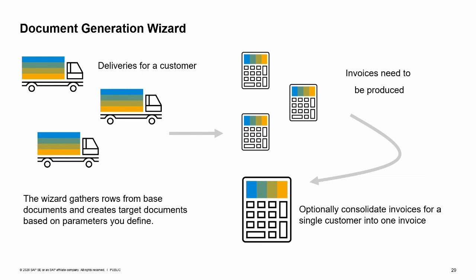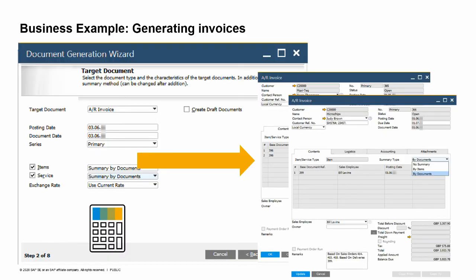All deliveries for an individual customer can be consolidated into one invoice or set to create separate invoices. At the end of the day, the document generation wizard generates consolidated invoices for the recent customer deliveries. In our case, the billing department created a parameter set for creating invoices that they use each week to do the batch job of creating invoices. The document run creates invoices with summary rows by delivery note. They have specified what criteria they use regularly to consolidate invoices and how to handle issues automatically as they arise.